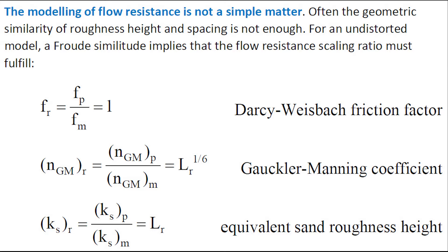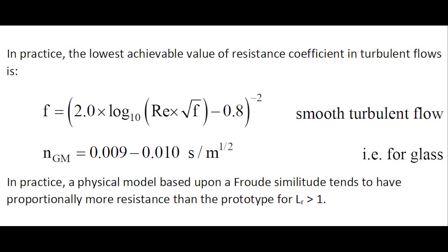Often, the geometric similarity of roughness height and spacing is not enough. For an undistorted Froude model, the flow resistance scaling is such that the Darcy friction factor should be identical. For an undistorted Froude model, the Chezy-Manning coefficient will be scaled with the geometric scaling ratio to the power 1/6, while the equivalent roughness height will be scaled with the same geometric scaling ratio. In practice, the lowest achievable value of resistance coefficient in turbulent flow is that for smooth turbulent flow, and a physical model based upon Froude similitude tends to have proportionally more resistance than in the prototype.